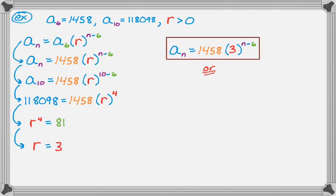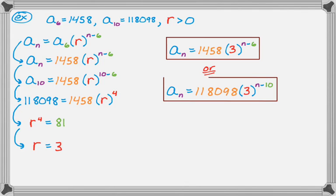So I could also write my answer as a sub n is a sub 10, which is 118,098, and then 3 to the n minus 10. So since I use a sub 10 as my coefficient, I then have to use n minus 10. So that's another option, but there's more.